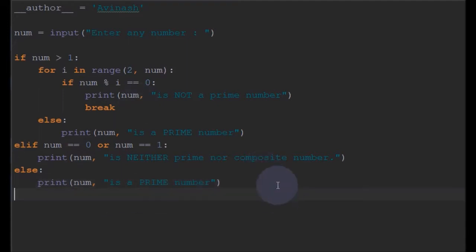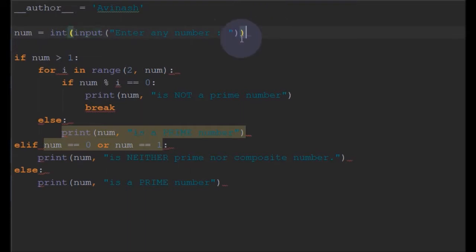That's it for the program. One more thing, we'll cast this into int for integer, so we enter only integer values. That way if we enter any other values it doesn't throw an error.